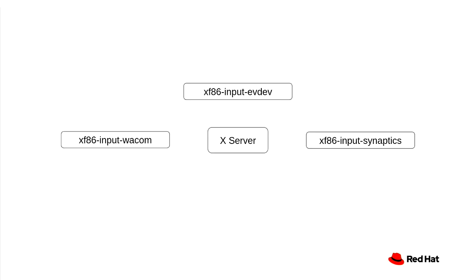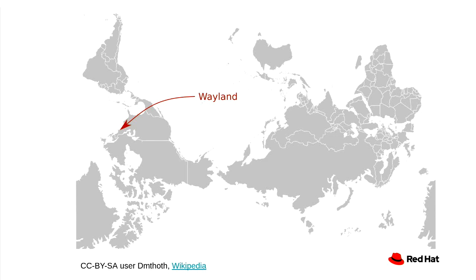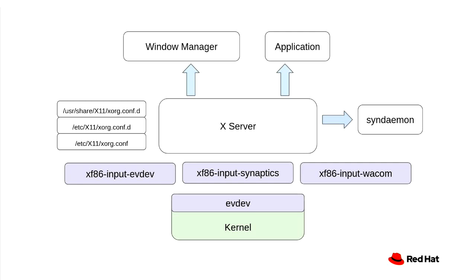Early last decade the graphics scene got disrupted by something called Wayland — named after a little town just outside of Boston. Wayland changes a whole bunch of technical assumptions we'd had with X for about 30 years. In X, the X server is the central process reading configuration files and loading shared libraries as input and video drivers. You also had a window manager, a compositing manager (which everyone built into the window manager), and little tools running on the side.